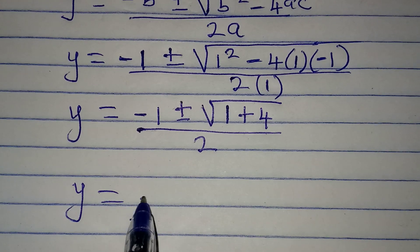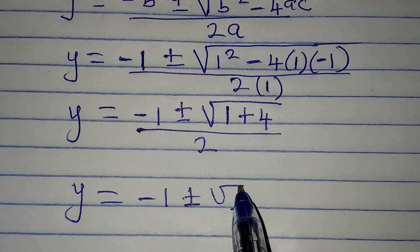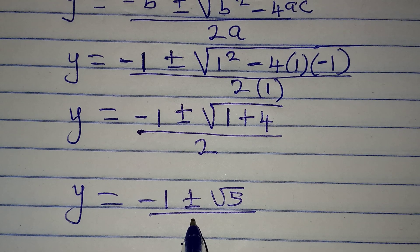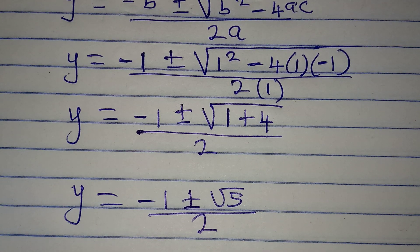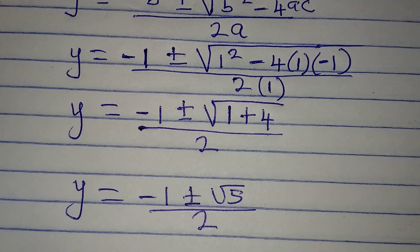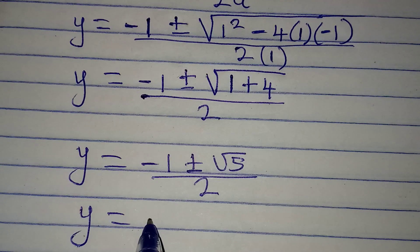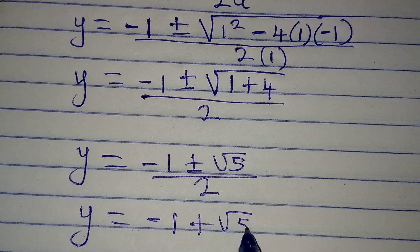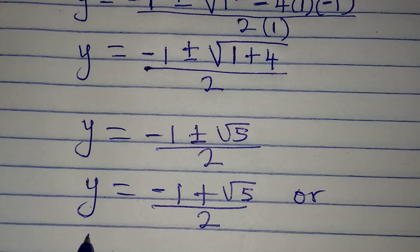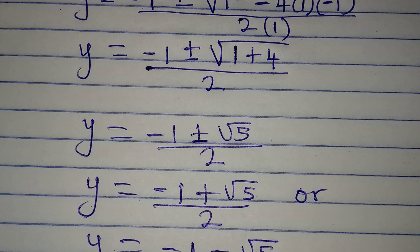So y will be equal to minus 1 plus or minus root 5, all over 2. We can break this into two: y equals minus 1 plus square root of 5, all over 2, or y equals minus 1 minus root 5, all over 2.